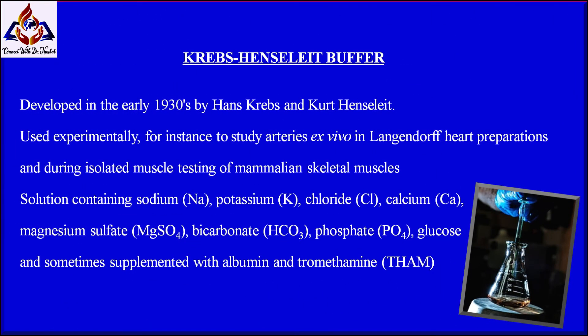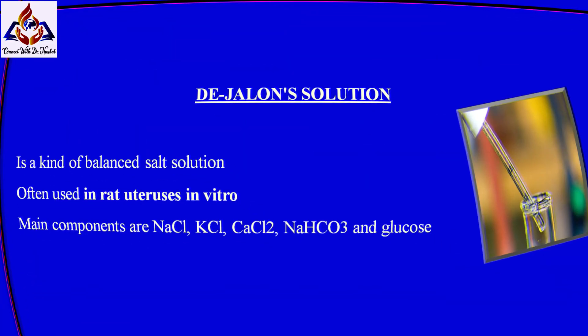Krebs-Hanseleit solution, developed by Hans Krebs and Kurt Hanseleit, is a solution containing sodium, potassium chloride, calcium, magnesium sulfate, bicarbonate, phosphate, and glucose, sometimes supplemented with albumin. It has been used experimentally, for instance, to study arteries ex vivo, in Langendorff heart preparation, and during isolated muscle testing of mammalian skeletal muscles.